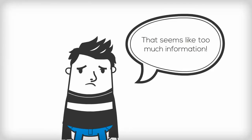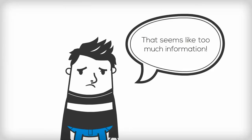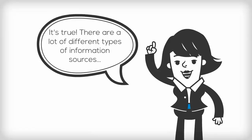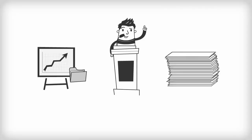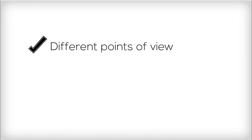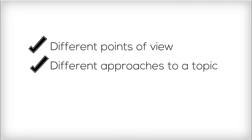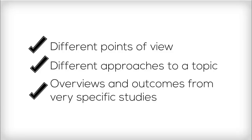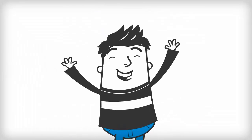That sounds like too much information. It's true — there are a lot of different types of information sources. But it's a good thing. Including information from a variety of resource types is so important when preparing a report, a presentation, an essay, really anywhere you are doing research at college. Why? You'll see different points of view, different approaches to a topic. You can gather both overviews and the outcomes of very specific studies. All of that put together leads to a much better final product from you.